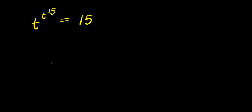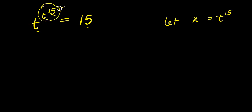Hello, how to solve this exponential problem and find the value of T that satisfies this equation. We are going to make use of two different methods. Here is t^(t^15) = 15. Now I can start by saying let x equal t^15, that means this t^15 here I can replace it with x, so we have t^x equals 15.